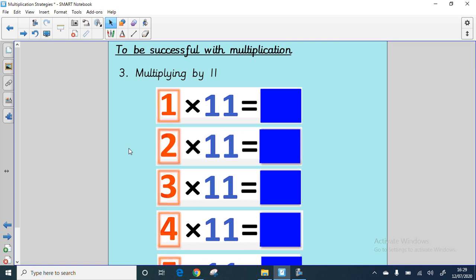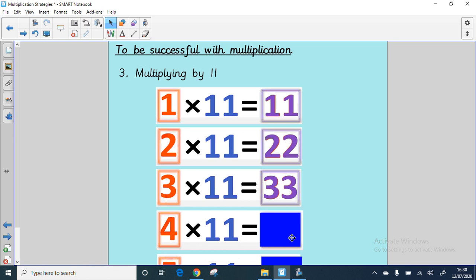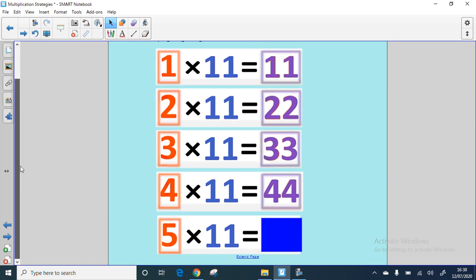Multiplying by eleven. Rule number three. This is another easy one. One times eleven is eleven. Two times eleven is twenty-two. Three times eleven is three elevens, or eleven plus eleven plus eleven. Yes, it's thirty-three. Four times eleven, which is eleven, plus eleven, plus eleven, plus eleven, is forty-four. And five times eleven is, of course, fifty-five.